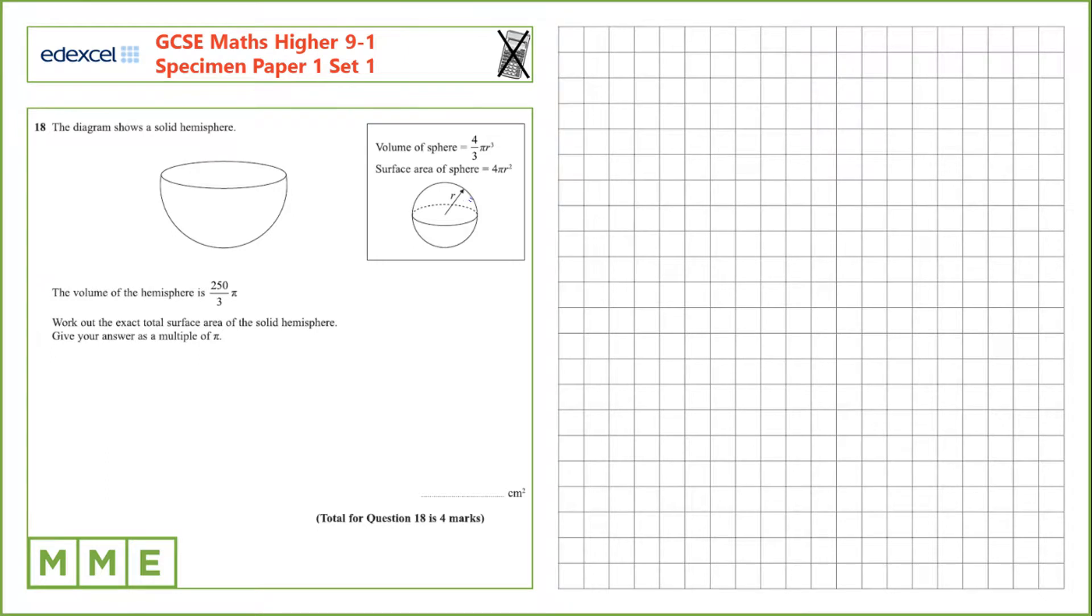Question 18. The diagram shows a solid hemisphere. We've been given that the volume of the hemisphere is 250 over 3 pi. We need to work out the exact total surface area of the hemisphere.